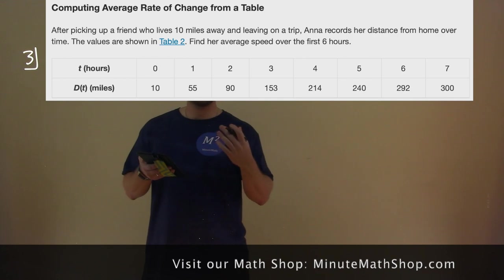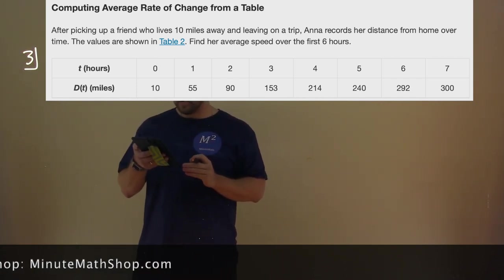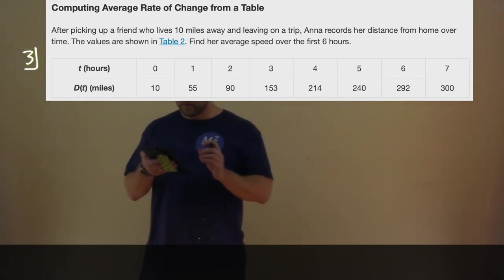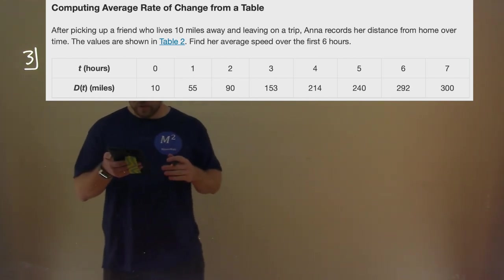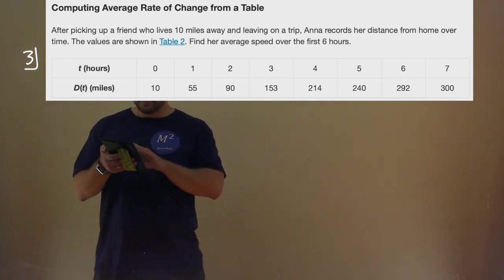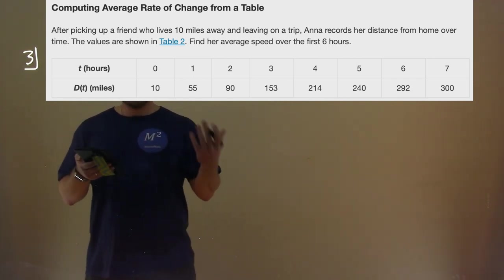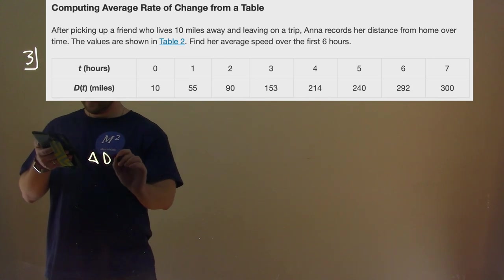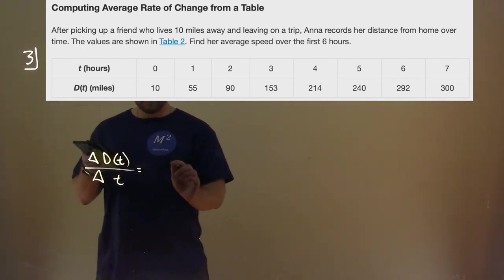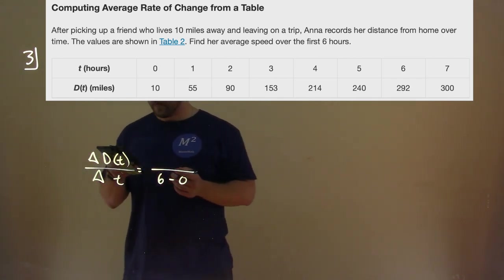Number three — we're computing average rate of change from a table. After picking up a friend who lives 10 miles away and leaving on a trip, Anna records her distance from home over time. Find her average speed over the first 6 hours. We use delta d(t) over delta t. The input goes from 0 hours to 6 hours — the first 6 hours we want to find.